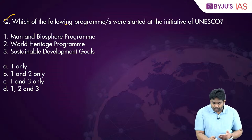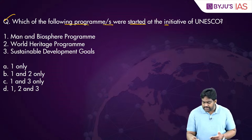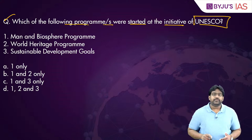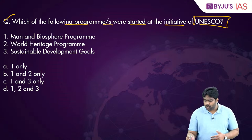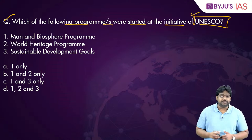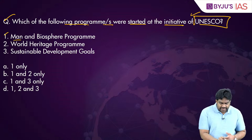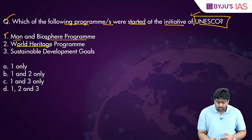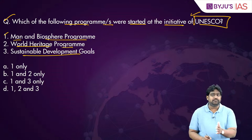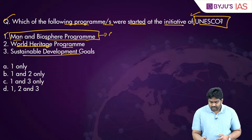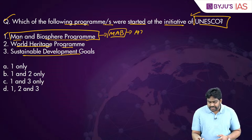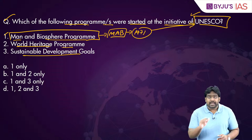The next question asks which programs were started at the initiative of UNESCO. The Man and Biosphere Programme, abbreviated as MAB, was started in 1971 by UNESCO. This initiative was started to promote the relationship between people and their environment — specifically the interaction between human beings and their immediate surroundings — with a focus on community-oriented conservation and protection efforts.